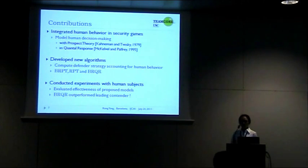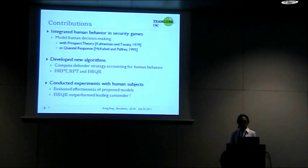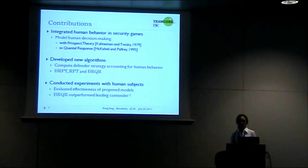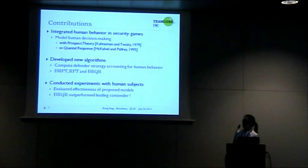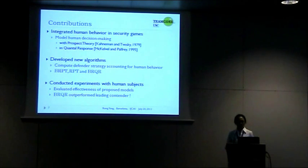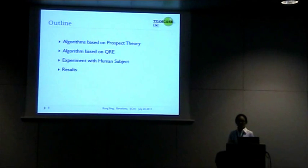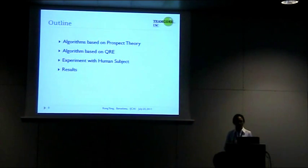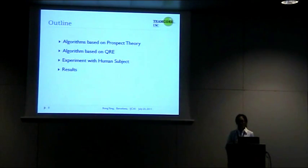In this paper, we integrate human behavior in security games by taking two approaches. The first is to model human decision making with prospect theory, and the second is to model their decision making as a quantal response. Based on these two models, we developed efficient algorithms to compute the defender's optimal strategy. We also conduct experiments with human subjects, and the results show that the algorithm BRQR, designed based on the QRE model, has outperformed the leading contender.